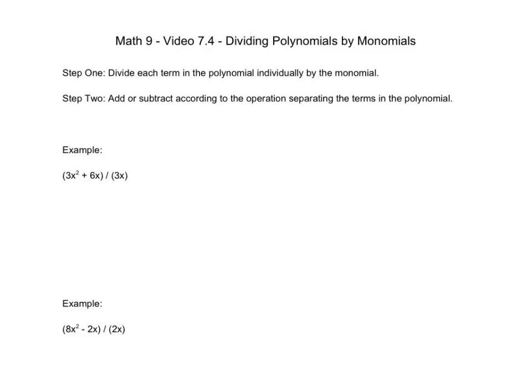So here we're dividing polynomials by monomials, which means that the numerator, the top number, is always going to be a polynomial. So basically, we just split that polynomial up, each of its individual terms, and divide each of them individually by the monomial numerator. And then we'll combine those answers using the addition or subtraction operations that are already written right there in the term.